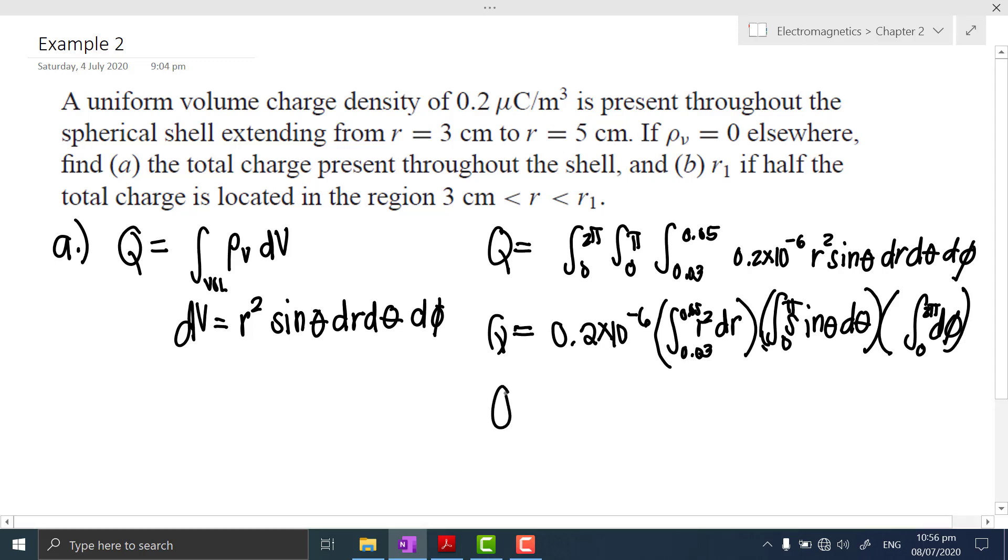You can directly solve this in your calculator since they are integrals in one variable or in one function. If we would compute, the integral of r² dr from 0.03 to 0.05 is equal to 49 over 1,500,000, times the integral of sin θ dθ from 0 to π is 2, and the integral of dφ from 0 to 2π is 2π.